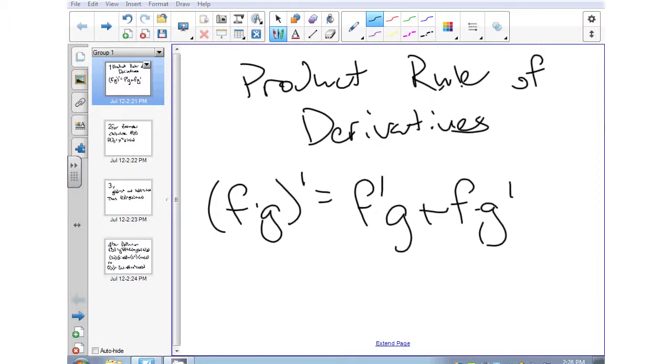To start off, this applies when you have two different functions and you want to take the derivative of that. To do that, you take the derivative of the first function times the second function plus the first function times the derivative of the second function.